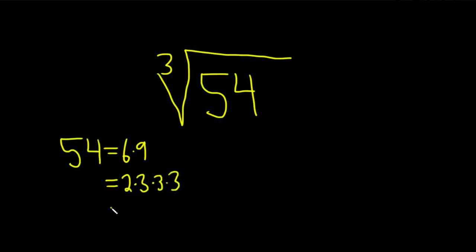And so now we have that this is 2 times 3. And then you add the exponents: 1, 2, 3. So 3 cubed. Success! So we've written 54 as a product of primes.